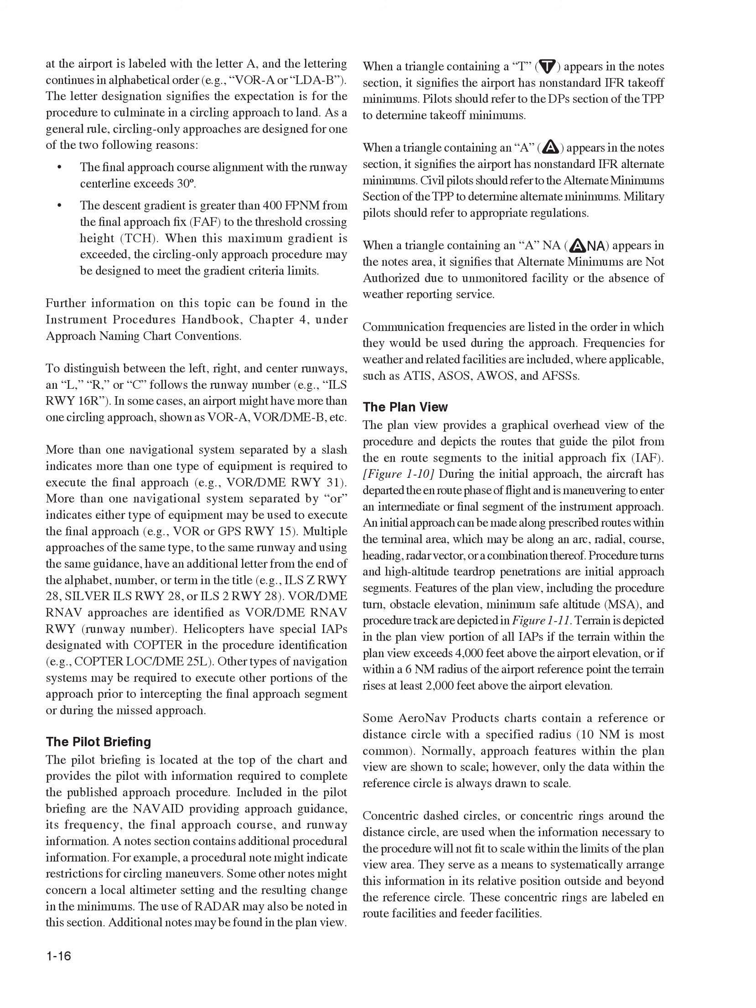Further information can be found in the Instrument Procedures Handbook, Chapter 4, under Approach Naming Chart Conventions. To distinguish between left, right, and center runways, an L, R, or C follows the runway number, for example ILS RWY 16R. In some cases, an airport might have more than one circling approach, shown as VOR-A, VOR/DME-B, etc. More than one navigational system separated by a slash indicates more than one type of equipment is required to execute the final approach, for example VOR/DME RWY 31. More than one navigational system separated by 'or' indicates either type of equipment may be used to execute the final approach, for example VOR or GPS RWY 15.